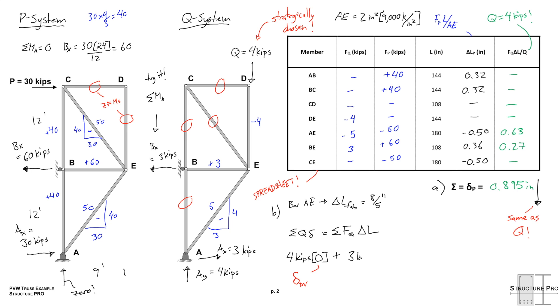It will be doing negative work because our Bx is to the left, but it will be doing work. So we have our 3 kips, our Bx reaction, times delta BH, how much support B is moving. And we set this 3 kips delta BH equal to the negative 5 kips, the member force in AE in our virtual system, times the fabrication error, 8 fifths of an inch.